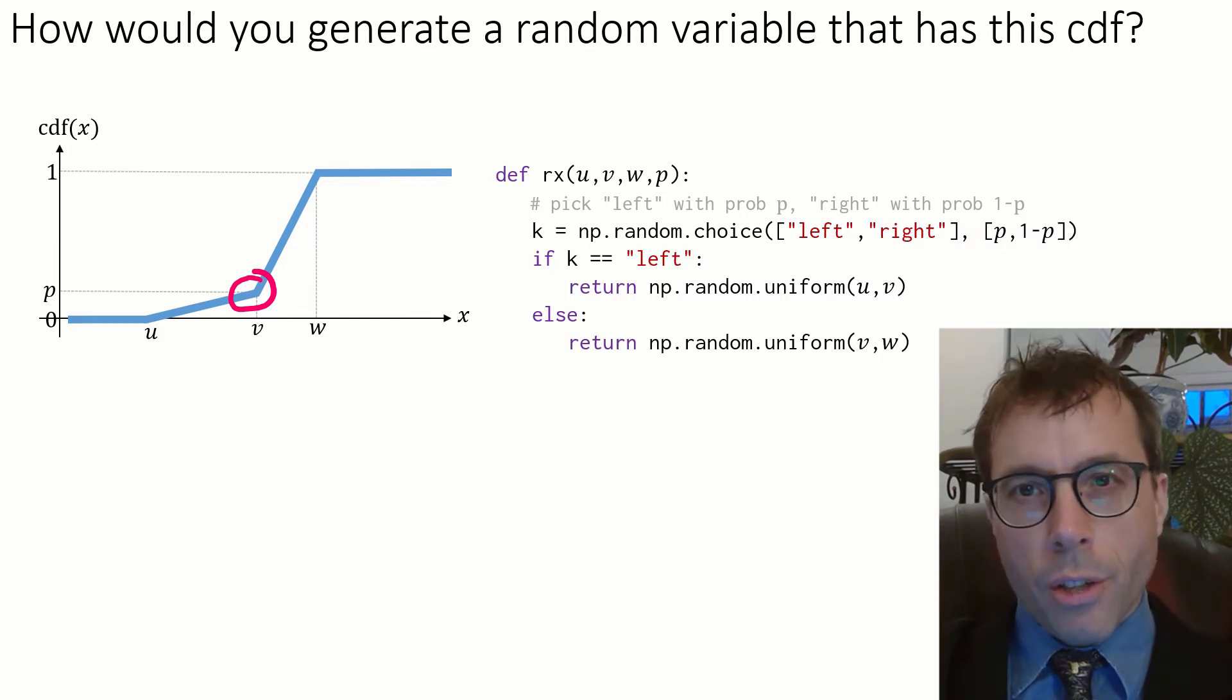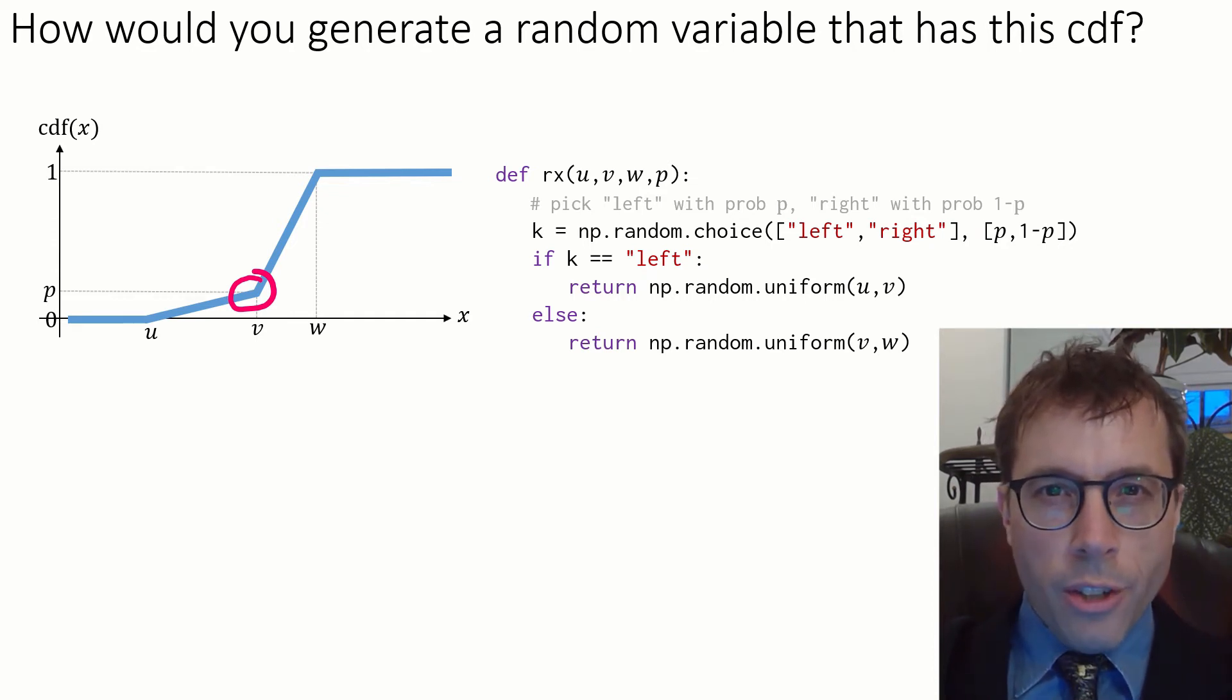Likewise, if I've decided to generate something on the right, I'll generate a different uniform. It's worth staring at this for a while. I've talked about why the CDF on the left translates to the code on the right. You should also spend some time thinking about it the other way. If someone gave you the code on the right, could you derive its CDF using the methods that we learned way back in section 1.5?